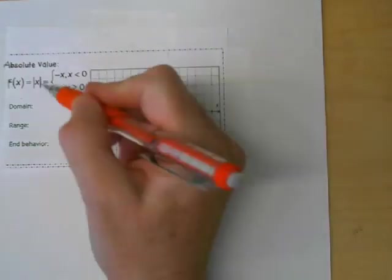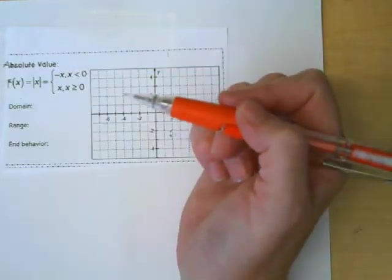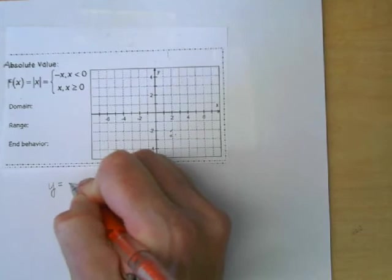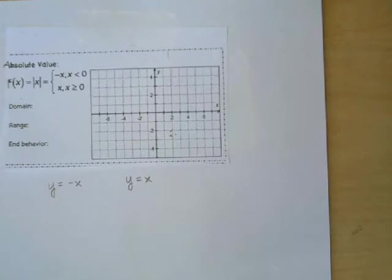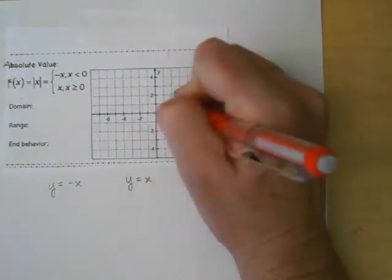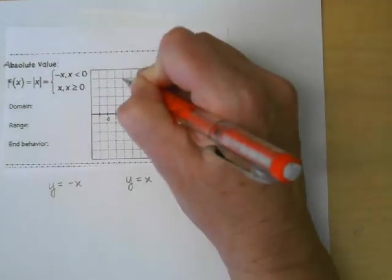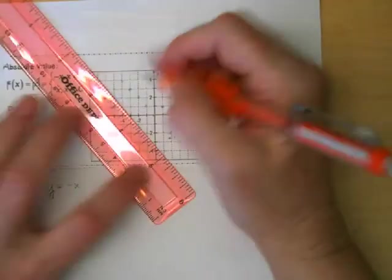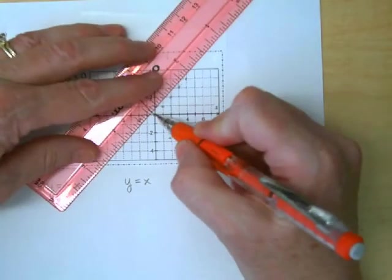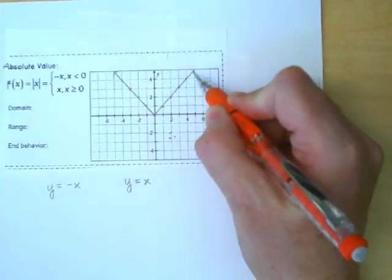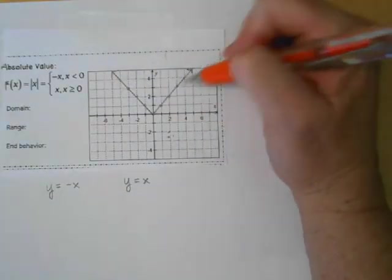They're telling us that the absolute value of x is negative x if x is less than zero, or y equals x if it's positive. So basically we know what this function looks like. I'm just going to put on my points. It's continuous, not something we'll talk about in the next chapter, but I don't have to lift up my pencil when I'm drawing that function.